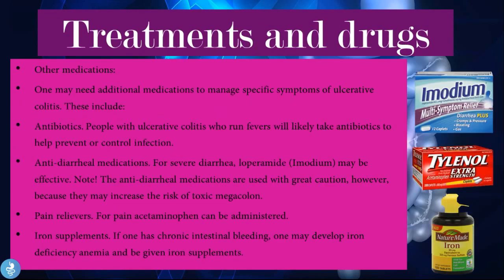Other medications to manage specific symptoms include antibiotics for patients who run fevers, to help prevent or control infection. Anti-diarrheal medications such as loperamide may be effective for severe diarrhea, but are used with great caution because they may increase the risk of toxic megacolon. For pain, acetaminophen can be administered. Iron supplements can be given if one has chronic intestinal bleeding and develops iron deficiency anemia.